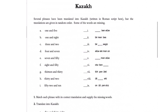Hi everyone, I'm Angela and today let's do another linguistics Olympiad problem called Kazakh. Several phrases have been translated into Kazakh, written in Roman script, but the translations are given in random order and some of the words are missing.